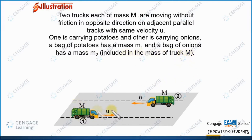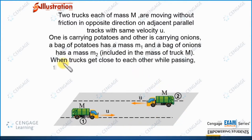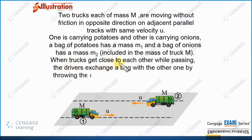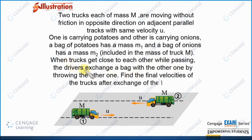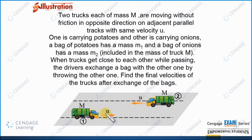That means M1 and M2 are both included in capital M. Capital M is the mass of the track plus the bag of onion or potato, and similarly for the other track. When the tracks get close to each other while passing, the drivers exchange bags by throwing them to the other one. We need to find the final velocities of both tracks after the exchange of the bags.